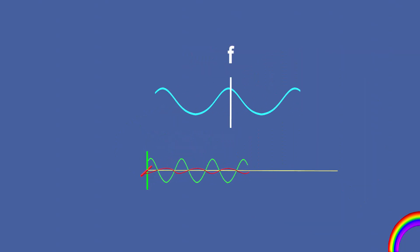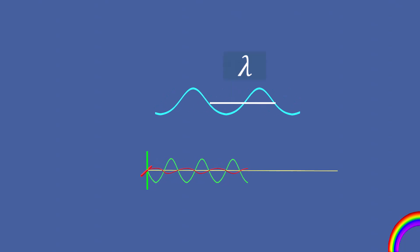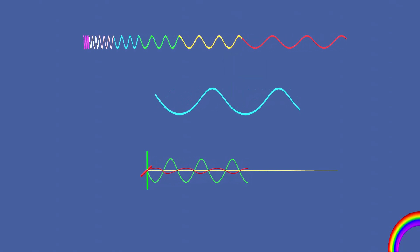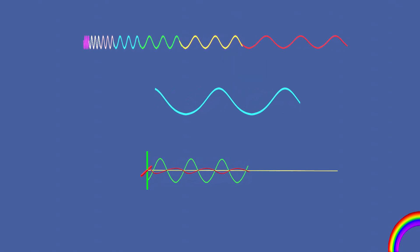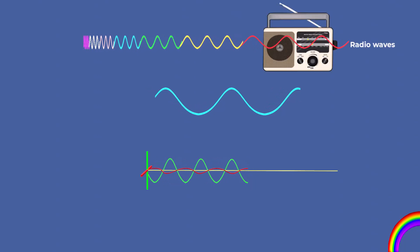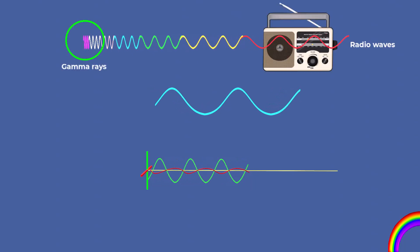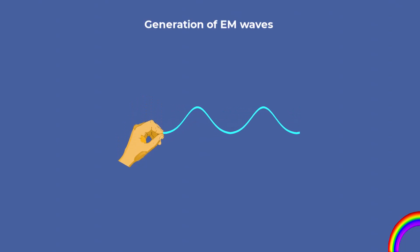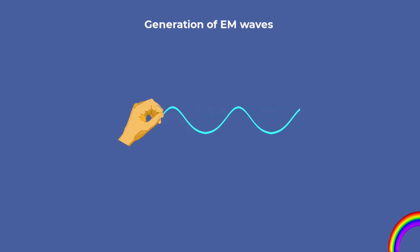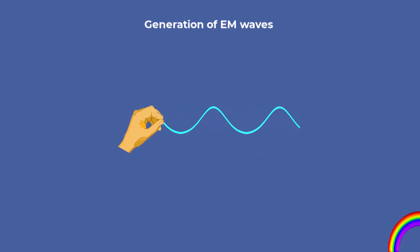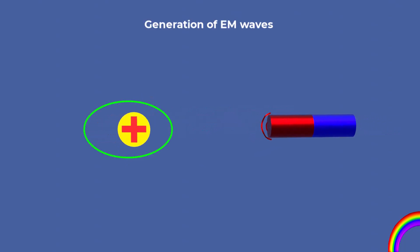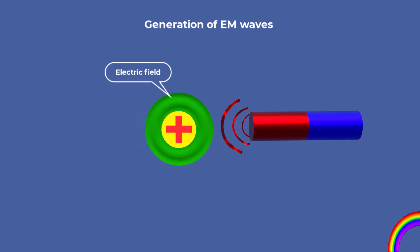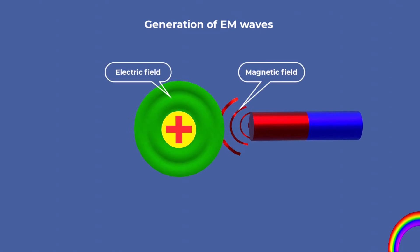Their frequency and wavelength determine their type in the electromagnetic spectrum, ranging from low-frequency radio waves to high-frequency gamma rays. Understanding how these waves are generated requires looking into the behavior of electric charges and the relationship between electric and magnetic fields.